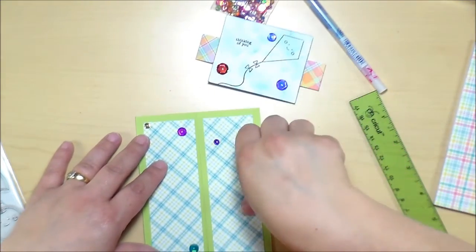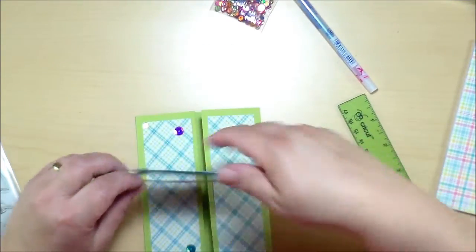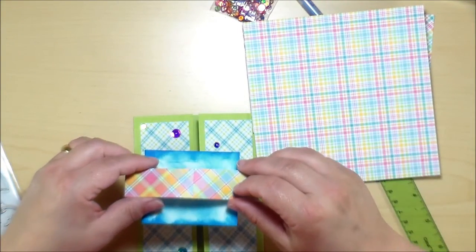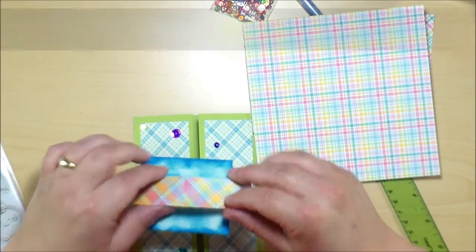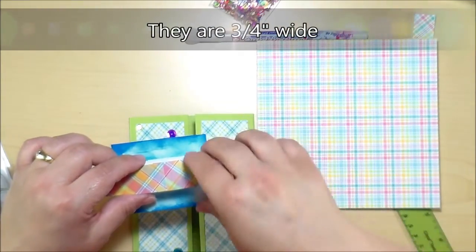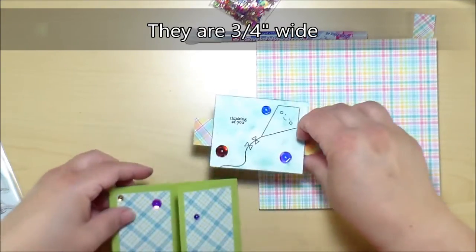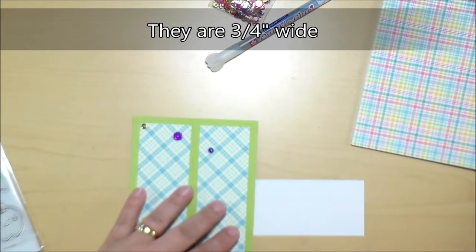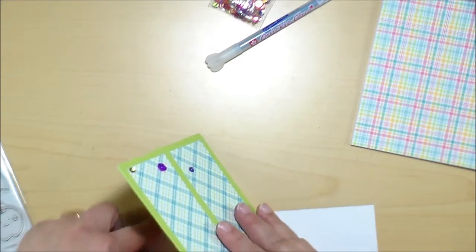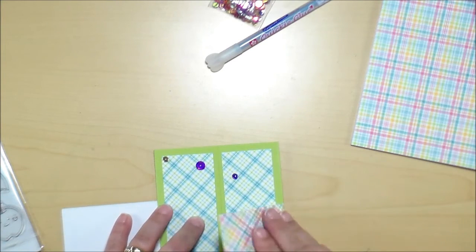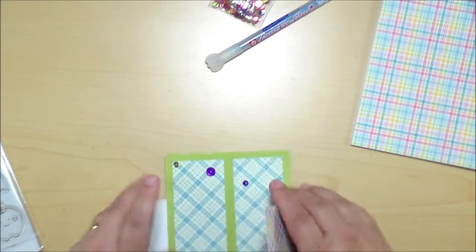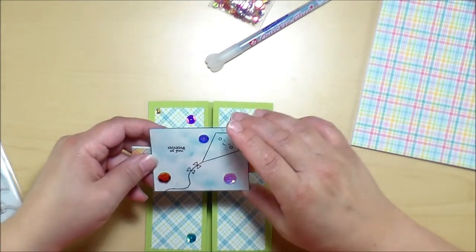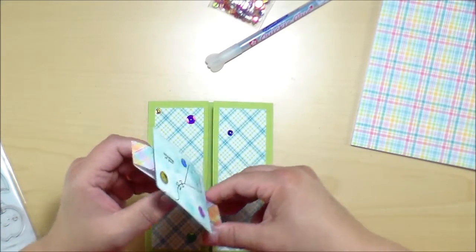And again, adhered those with double-sided tape. Then I cut two strips from the patterned paper and glued them together right here using the quickie glue pen. And then I just laid it behind the card like so and simply folded it around and creased it like that, and then trimmed off the excess and glued it together.